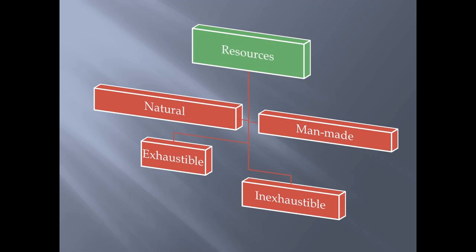Natural resources can again be divided into two types: exhaustible natural resources and inexhaustible natural resources. Exhaustible natural resources are present in limited quantity, and if we do not use them wisely then they will exhaust and will not be available for future use. For example, all fossil fuels are exhaustible natural resources, which we will study in this chapter.